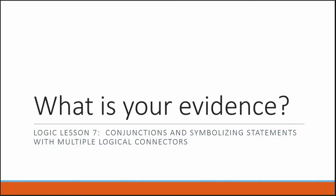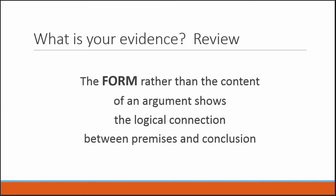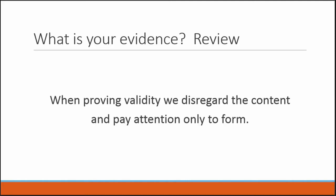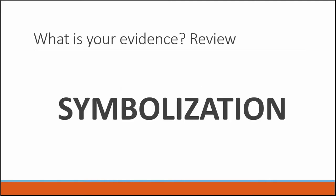But first, a little bit of review. We remember that validity has to do with the logical connection between premises and conclusion — that the form, rather than the content of an argument, shows the logical connection between premises and conclusion. And for that reason, when proving validity, we disregard the content and pay attention only to form. If we can prove the form of the argument is valid, then we prove that the entire argument is valid. Symbolization is the technique that we use for isolating the form of the statements and the form of the argument from the content.